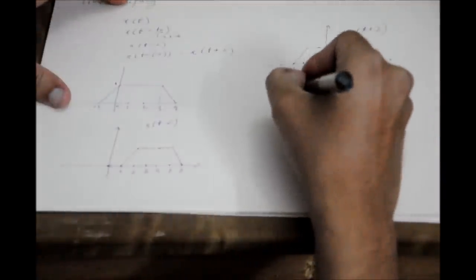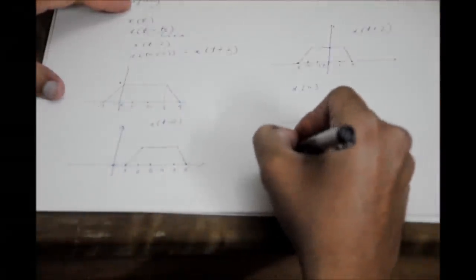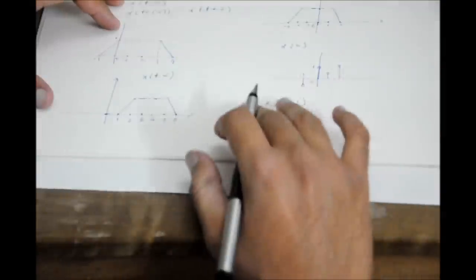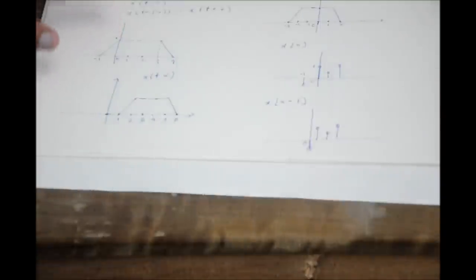For a discrete time example, suppose we have x of n with samples at various points including 1 and 0. We want to find x of n minus 1. At n equals 0, we look at the value at minus 1. We just shift all the samples 1 unit to the right, and that is time shifting in the discrete time case.